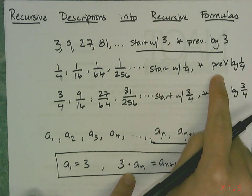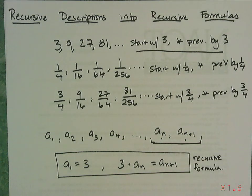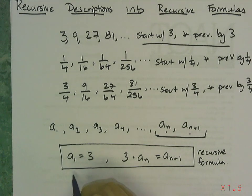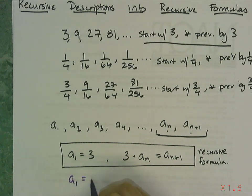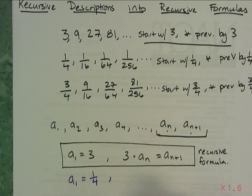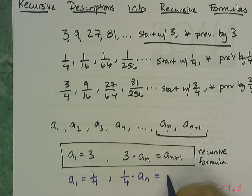So let's look at this one. How do I write this one in this notation? Let's change colors. I'm going to change start with 1/4, multiply previous by 1/4 into the rule in a recursive format. So a₁ = 1/4. And then I multiply the previous by 1/4, means I take 1/4 and I multiply it by aₙ. And that will give me aₙ₊₁.